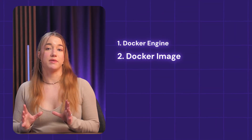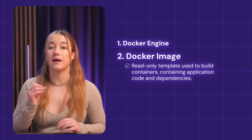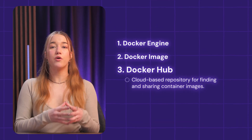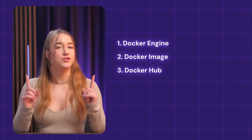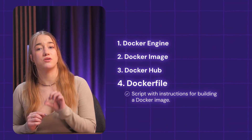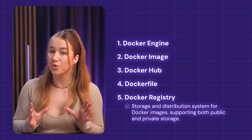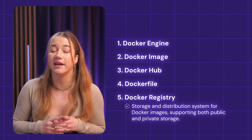Other important elements include Docker Image, which is a read-only template used to build containers containing application code and dependencies. There's also Docker Hub, a cloud-based repository for finding and sharing container images. A Dockerfile is a script with instructions for building a Docker image. And finally, a Docker Registry is a storage and distribution system for Docker images, supporting both public and private storage.